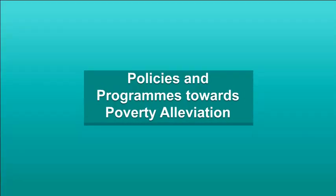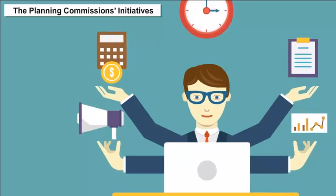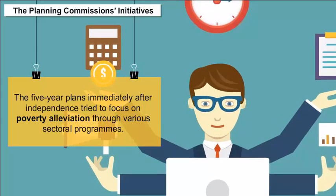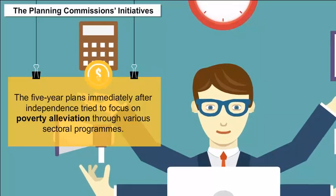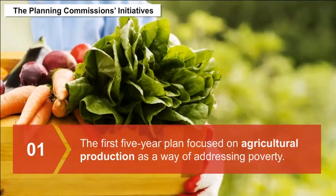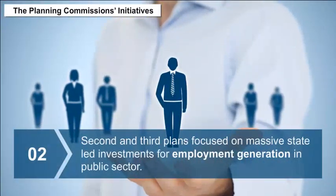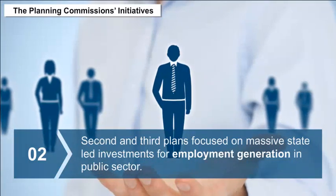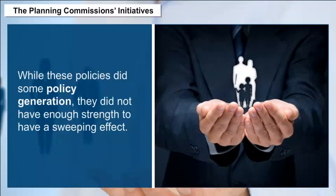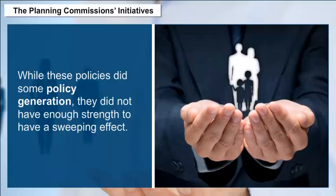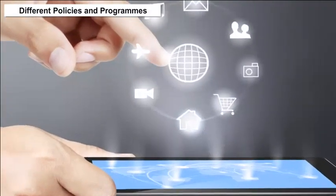Policies and Programs Towards Poverty Alleviation — The Planning Commission's Initiatives: the five-year plans immediately after independence tried to focus on poverty alleviation through various sectoral programs. The first five-year plan focused on agricultural production as a way of addressing poverty, while the second and third plans focused on massive state-led investments for employment generation in the public sector. While these policies did generate some employment, they did not have enough strength to have a sweeping effect.